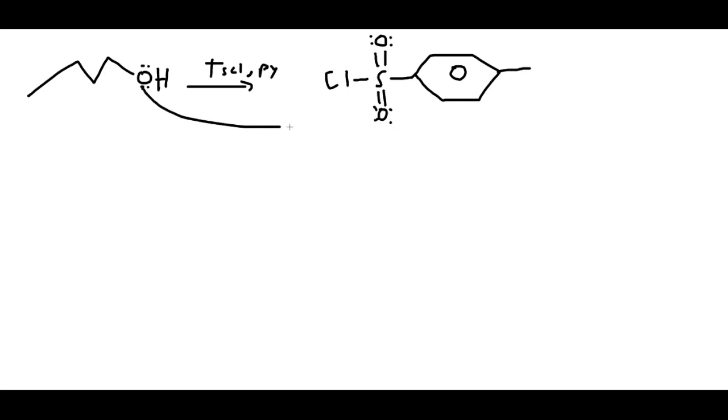In this shape, we have the OH come in and attack the sulfur. This will kick off the chlorine in this reaction. This will give us a reaction that will look like this: OH will have one lone pair with a positive charge.